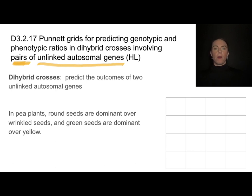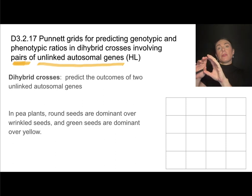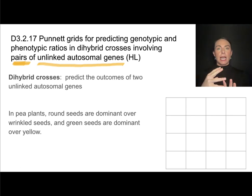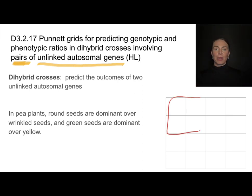Let's say I get a problem that starts off like this: in pea plants, round seeds are dominant over wrinkled seeds, and green seeds are dominant over yellow. I'm hearing that there are two traits — a trait for seed shape and another gene for seed color. I want to track both of those at the same time and analyze the predicted outcomes. Since there are two genes, shape and color, I want to use a dihybrid cross.